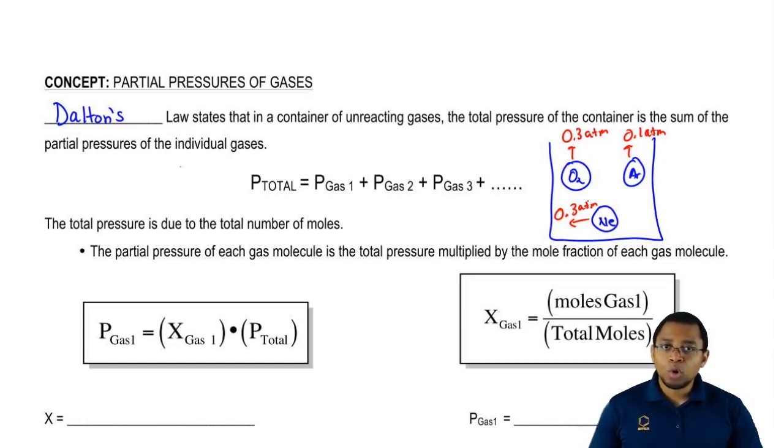Dalton's Law says, well, the total pressure inside of the container is just each of them added up together. According to Dalton's Law, the total pressure equals 0.7 atmospheres. That 0.7 atmospheres comes from us adding up each of those individual pressures together.